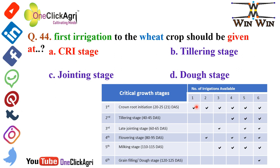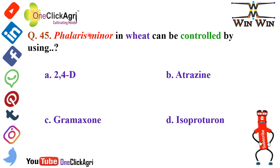Irrigation schedule based on availability: if one irrigation is available, give it at Crown Root Initiation stage. If two, give first at Crown Root Initiation and second at Flowering stage. If three, give at Crown Root Initiation, Late Jointing, and Milking stages. If four, give at Crown Root Initiation, Tillering, Flowering, and Milking stages. If five irrigations, skip Grain Filling/Dough stage and irrigate all other five critical stages. If six are available, irrigate at all six critical growth stages — please remember this chart.